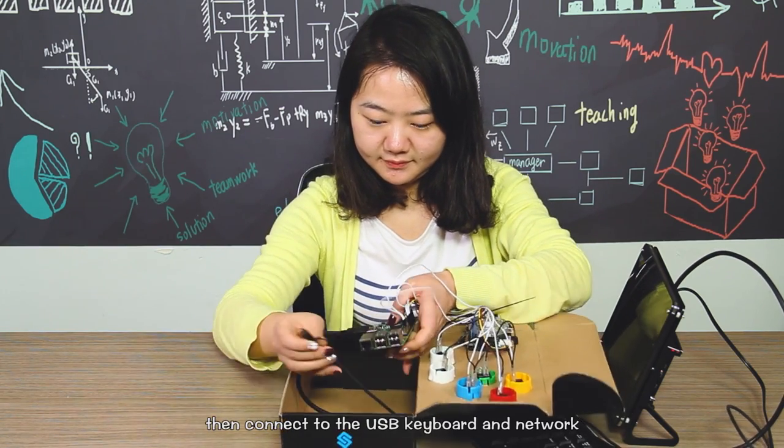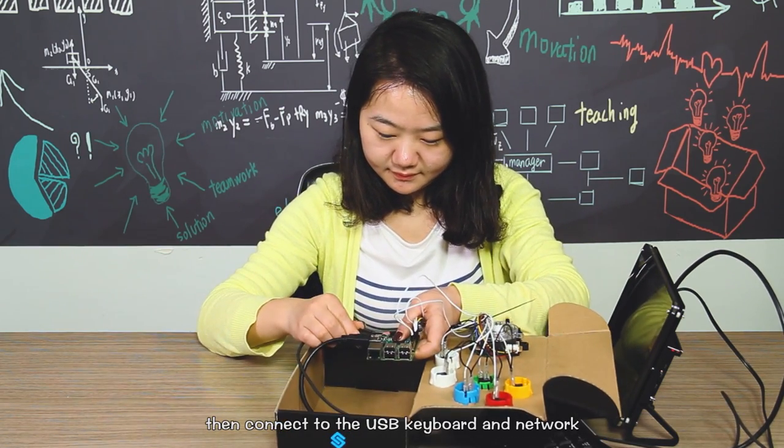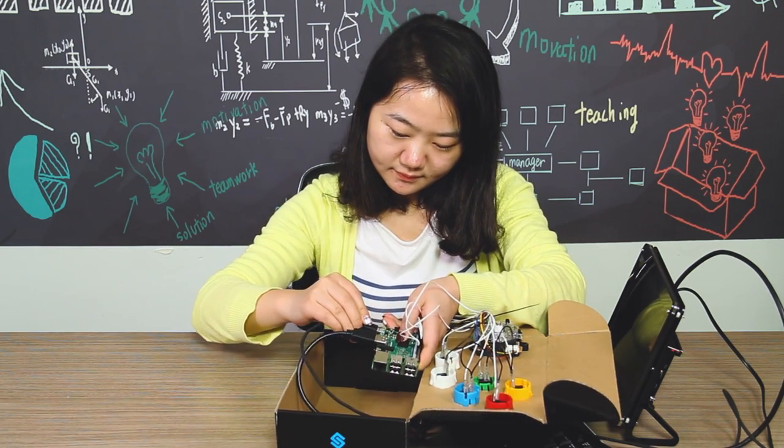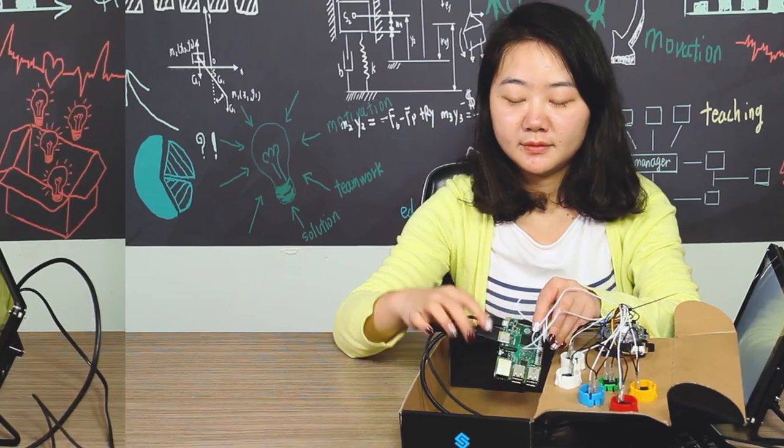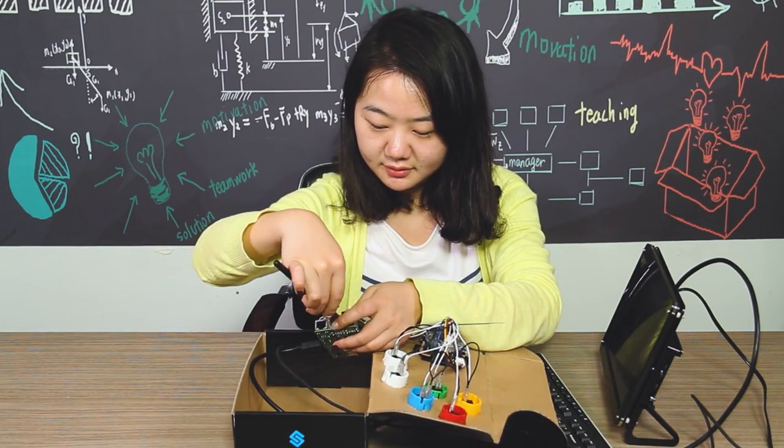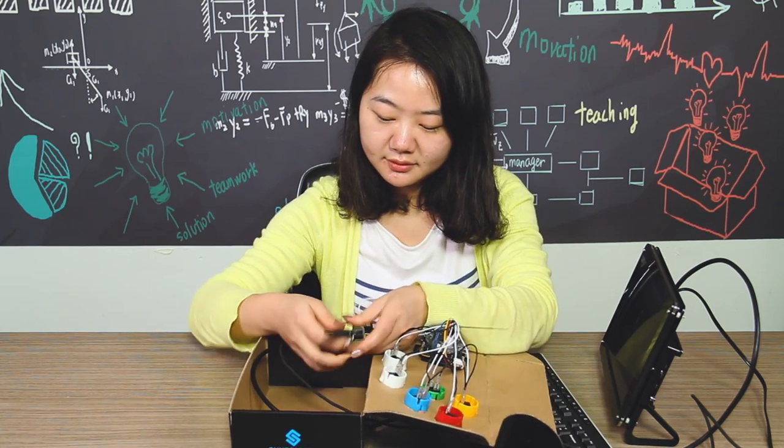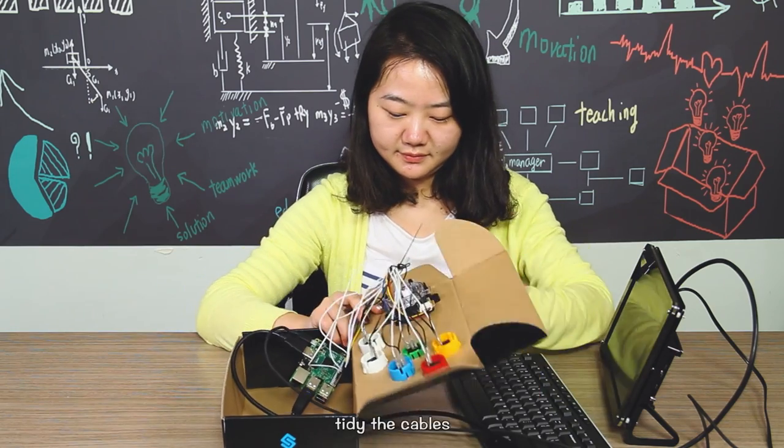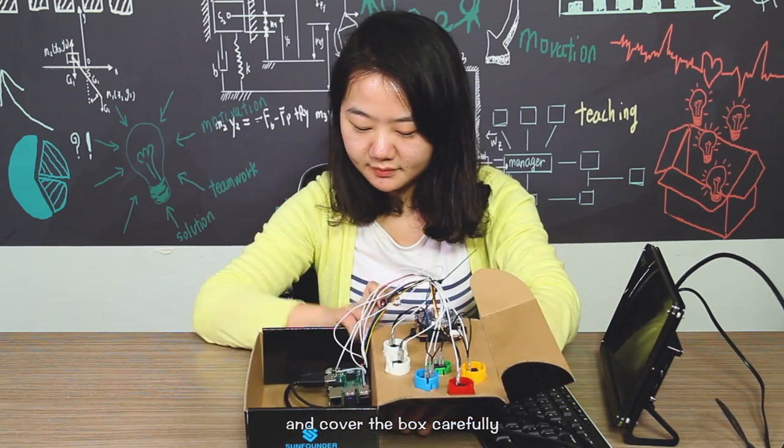Then connect the USB cable and network. Here we plug in the USB WiFi dongle. Tidy the cables and cover the box carefully.